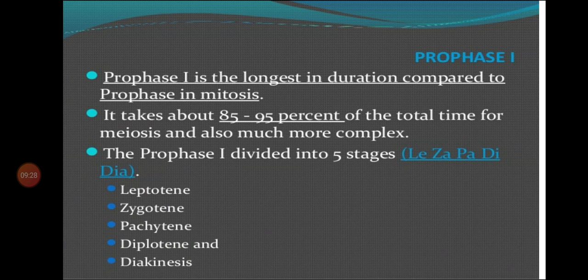Prophase 1 is the longest phase in duration compared to prophase in mitosis. It takes about 85 to 95 percent of the total time for meiosis and is a much more complex process. Among all the phases of meiosis 1 — prophase 1, metaphase 1, anaphase 1, telophase 1 — prophase 1 is the longest, and it is also longer than the prophase of mitosis.